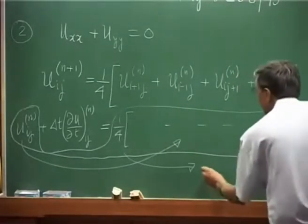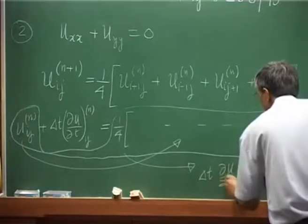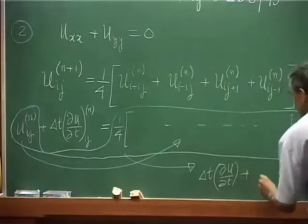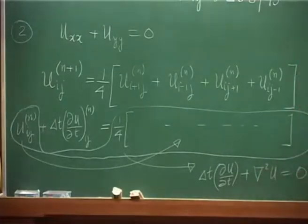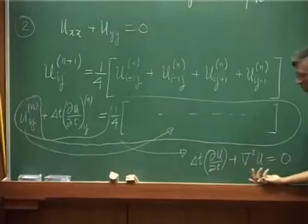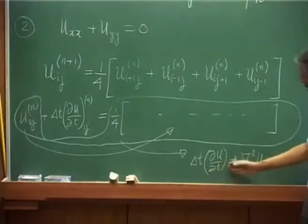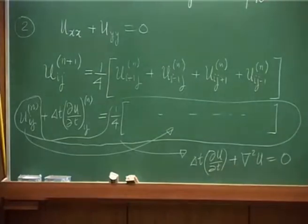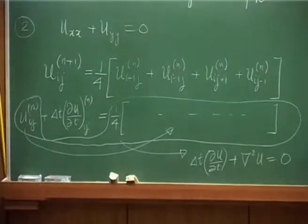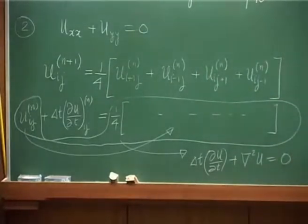The whole idea is that when you try to solve an equation of this kind, you convert it into a pseudo time-dependent equation and you are interested in the steady state when this term drops out. When del u del t is 0, you get back to your original equation. This part is easy — you can get the equivalent equation. We tried to solve the Laplace equation but in effect we are solving an equation of this kind.